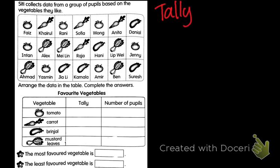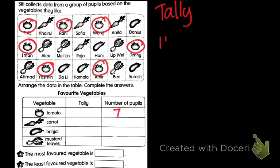Tally is like this. First, we count tomato. How many tomatoes? One, two, three, four, five, six, seven. There are seven pupils who like tomatoes. So in tally, how do we do it? One, two, three, four, five — and then six, seven. This is seven. Write it here.